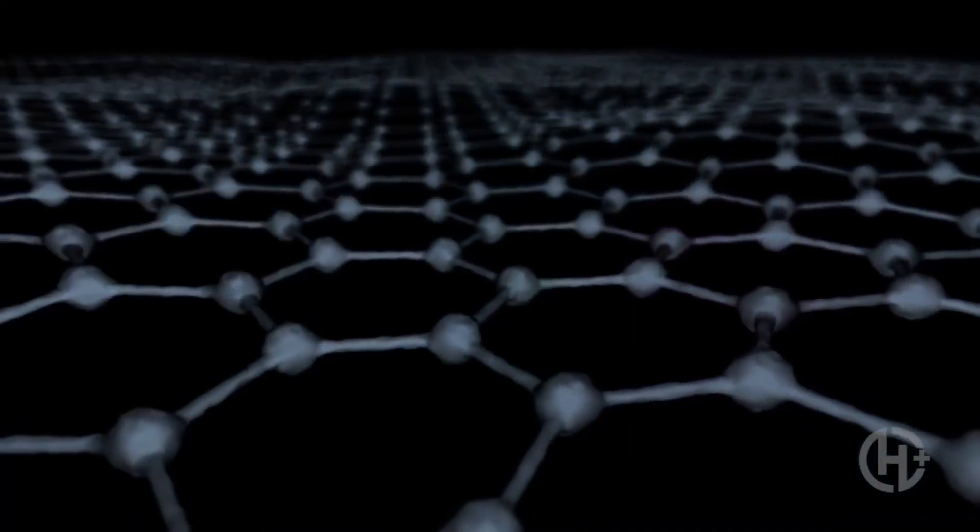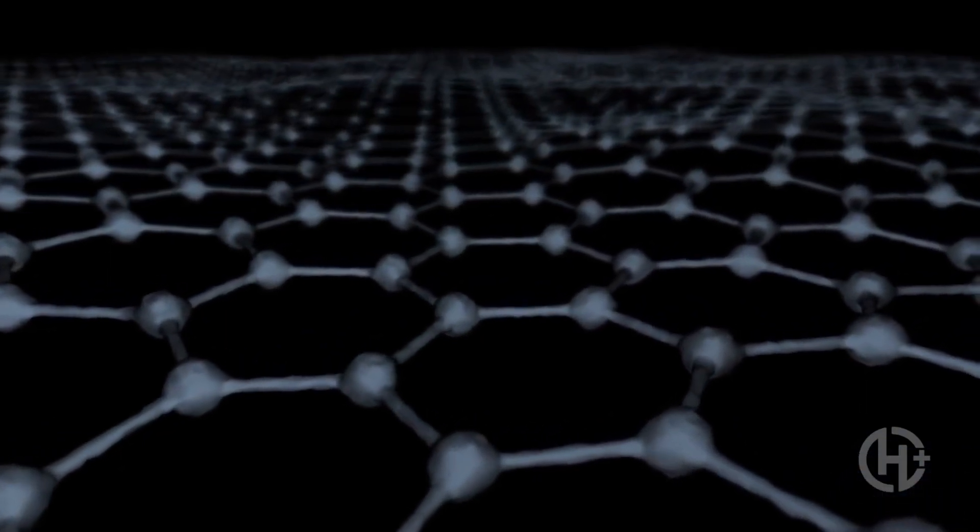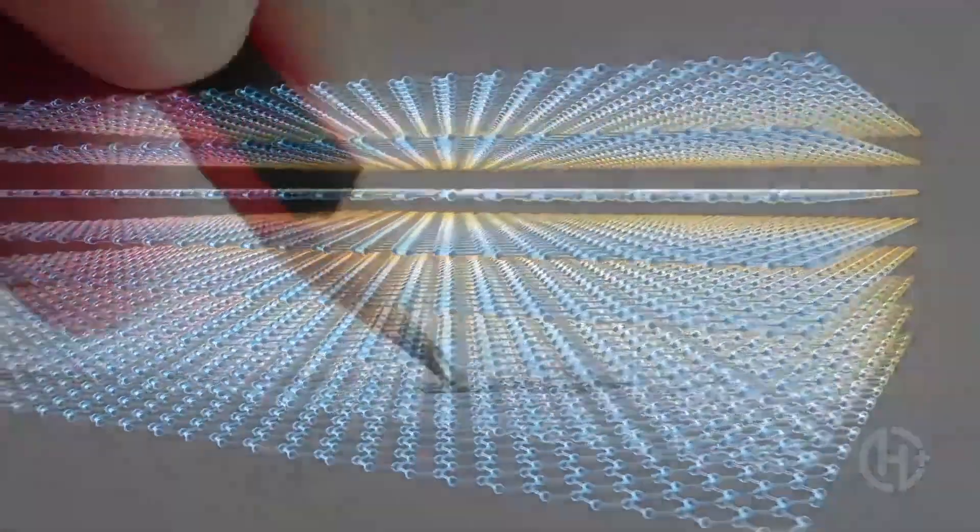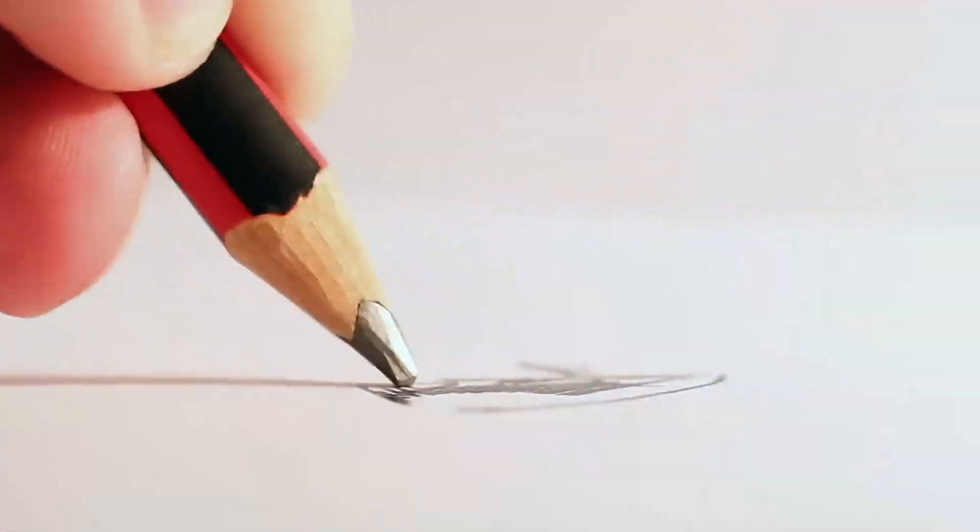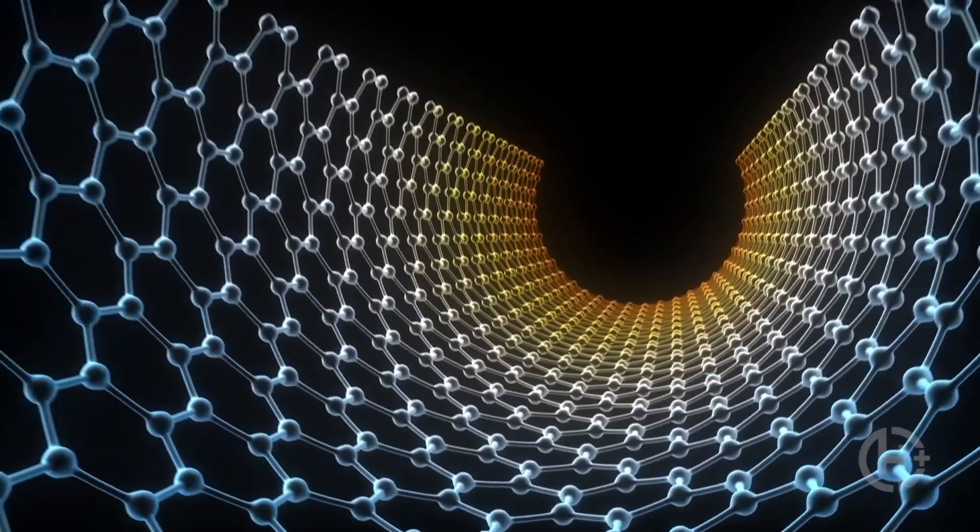For those who haven't heard of it yet, graphene is an allotrope of carbon first discovered about a decade ago. It can even be found scattered in the graphite of your pencil. But recently, we realized that it was kind of a wonder material with countless uses.